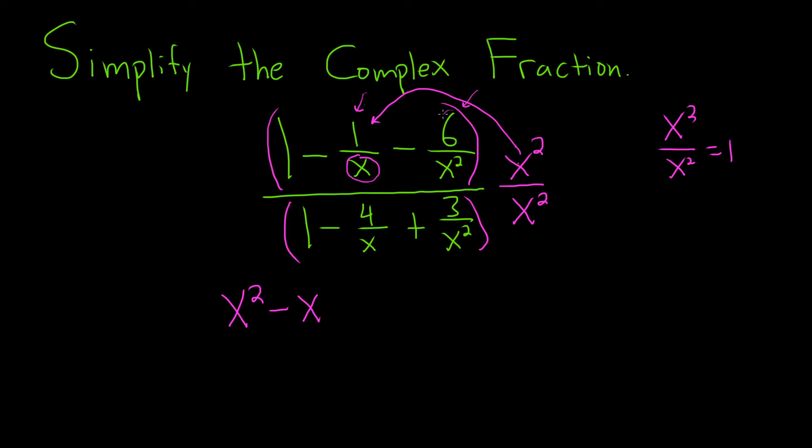And then x squared times this piece, it'll completely cancel it. So we'll just get minus 6. It'll get rid of the x squared. Now we do it on the bottom. x squared times 1 will give us x squared. Then we have the minus.